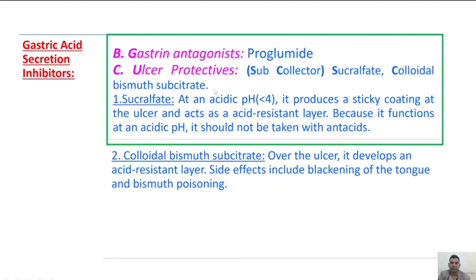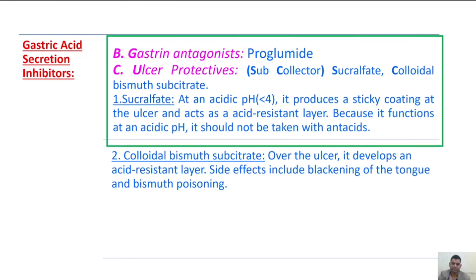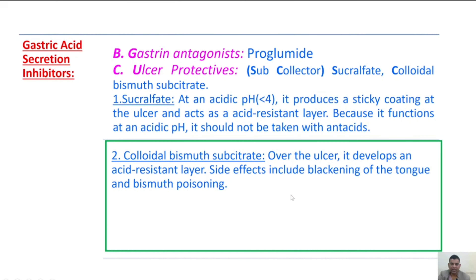Next, ulcer protectives — the drugs that give protection to the ulcer. These are sucralfate and colloidal bismuth substrate. First, sucralfate: at an acidic pH, it produces a sticky coating at the ulcer and acts as an acid-resistant layer. Because it functions at an acidic pH, it should not be given along with antacids. Second, colloidal bismuth substrate: over the ulcer, it develops an acid-resistant layer. Side effects are blackening of the tongue and bismuth poisoning.